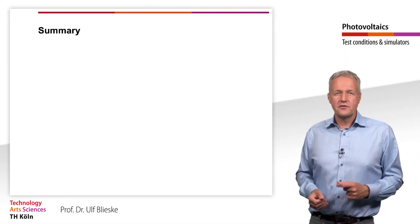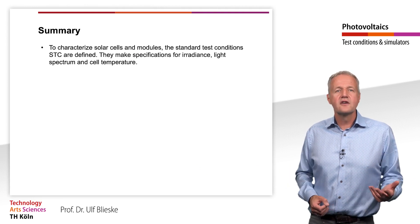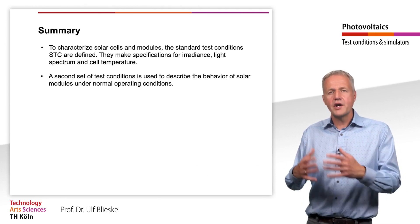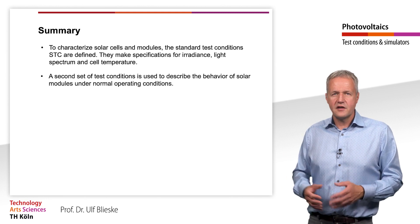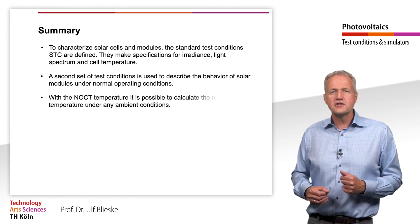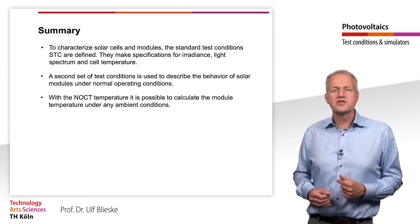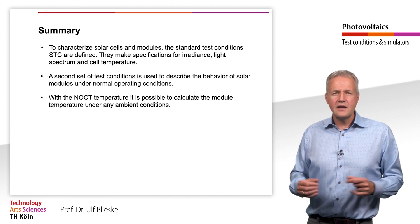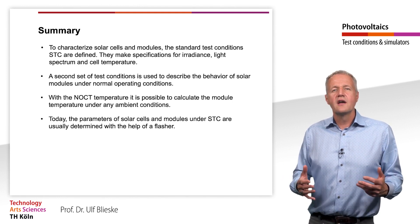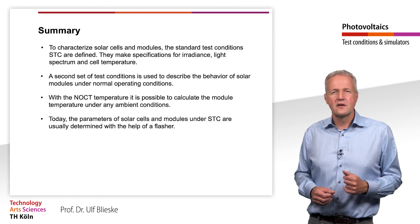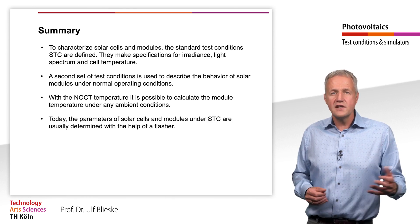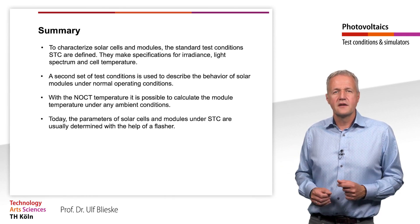Let us summarize this learning unit. To characterize solar cells and modules, the standard test conditions — STC — are defined, which give specifications for irradiance, light spectrum, and cell temperature. To describe the behavior of solar modules under normal operating conditions, a second set of test conditions is used. With the NOCT, the normal operating cell temperature, it is possible to calculate the module temperature under any environmental conditions. Today, the parameters of solar cells and modules under STC are usually determined with the help of a flash simulator. Thank you for your attention.